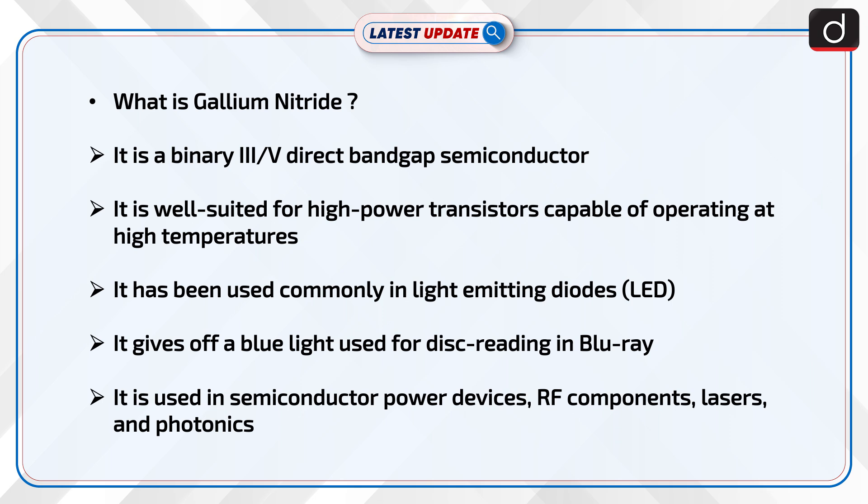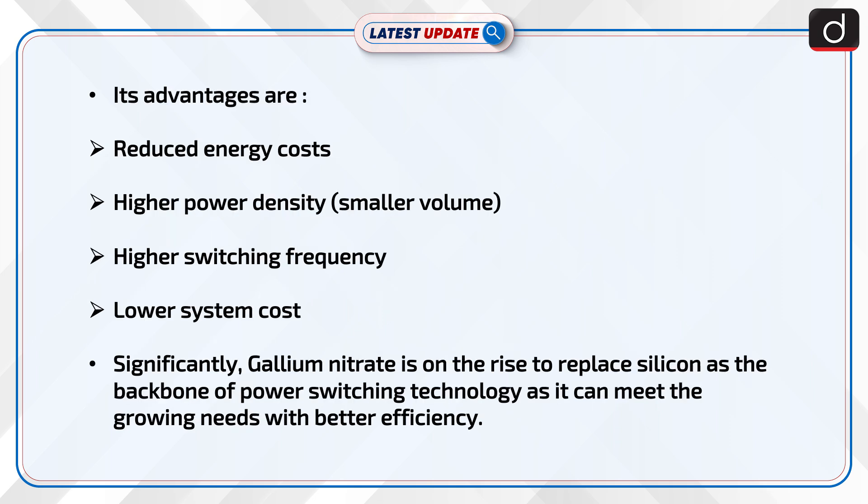Now let's understand what Gallium Nitride is. It is a binary III-V direct bandgap semiconductor, well suited for high-power transistors capable of operating at high temperatures. It has been commonly used in light-emitting diodes (LEDs), gives off blue light used for disc reading in Blu-ray, and is used in semiconductor power devices, RF components, lasers, and photonics.